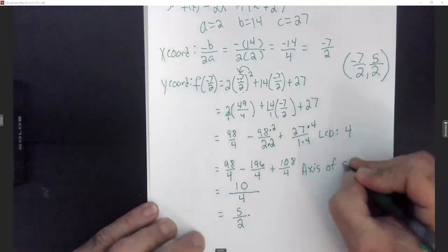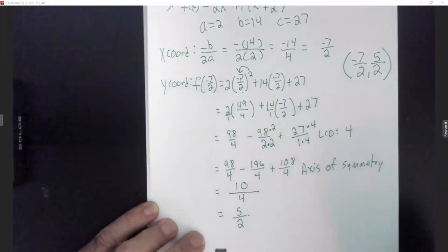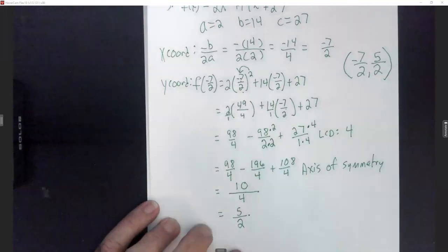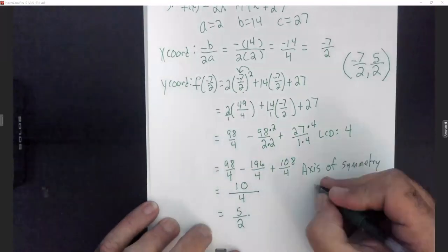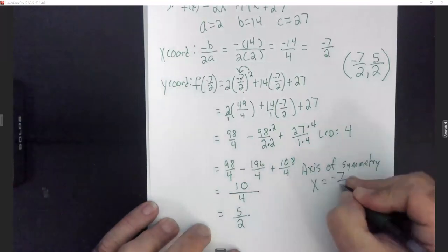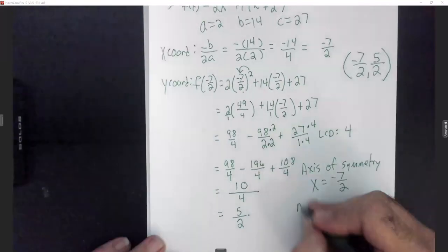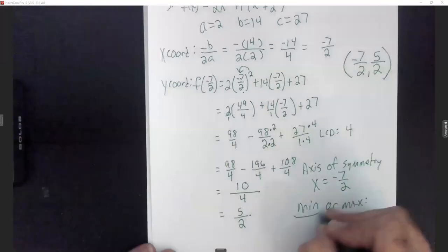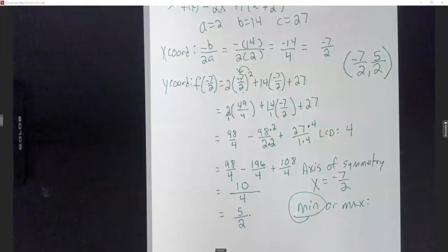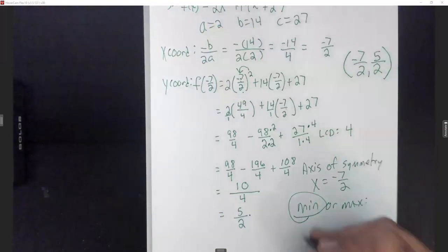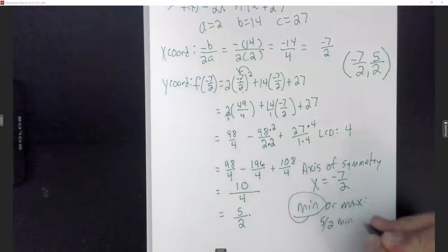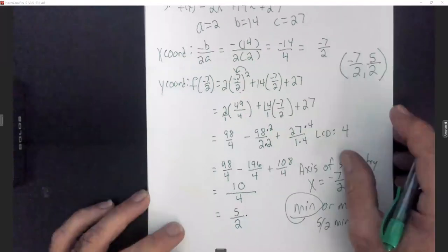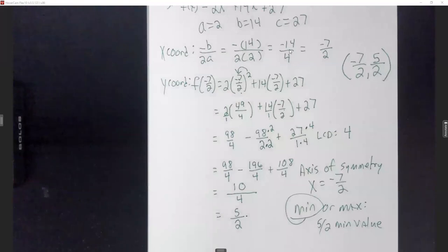The axis of symmetry is x = −7/2. Since the x-squared term is positive, this is a minimum, and the minimum value is 5/2.